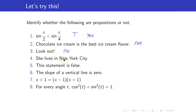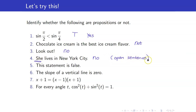Number four: 'She lives in New York City.' This is not a proposition because you have the word 'she' here — you actually call this an open sentence. We do not know the antecedent of 'she'; we do not know who it refers to. 'This statement is false' is also not a proposition; in particular, you call this a paradox.